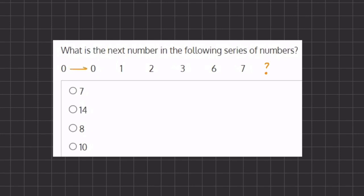Moving from 0 to 0 we add 0, moving from 0 to 1 we add 1, from 1 to 2 we add 1, from 2 to 3 we add 1, from 3 to 6 we add 3, and from 6 to 7 we add 1. As you can tell, this pattern does not seem to be consistent.